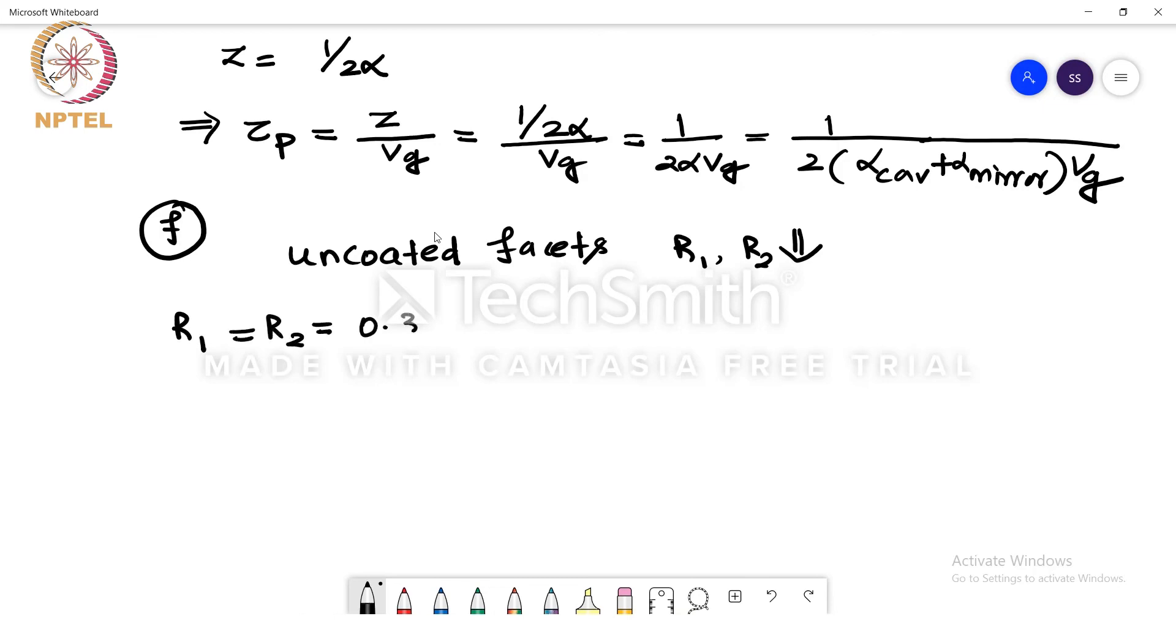So we need to again calculate the threshold gain which is equal to alpha cavity plus 1 by 4d into ln of 1 by r1 into r2. So we need to substitute again all the new value of r1 and r2 and find the gain threshold. And this solves all the questions, question number 5 to 10. I have used A to F for the notation here but they represent question 5 to 10 of the assignment which shares the same common information.